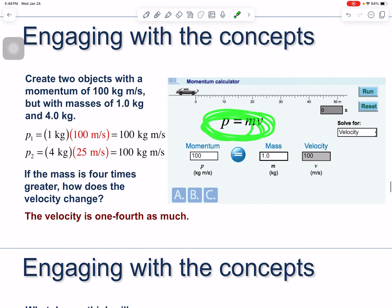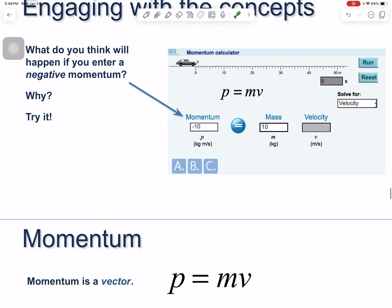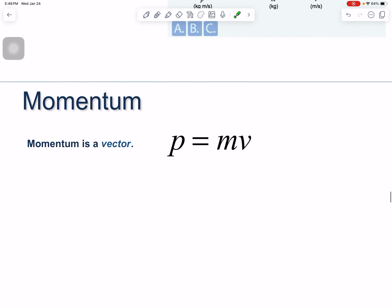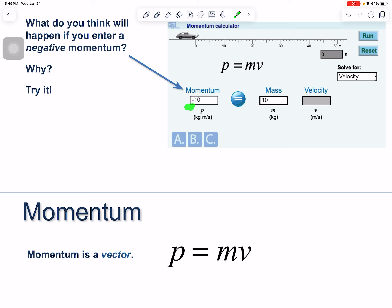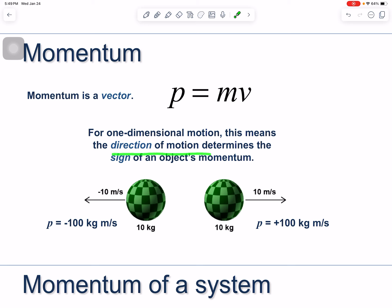What will happen if you enter a negative momentum into the simulator? The car goes the other way. Remember, momentum is a vector. The negative sign indicates direction — whether the car is going left or right. So the sign of momentum tells you which direction the object is moving. For one-dimensional motion, the direction is determined by the sign: negative typically means moving to the left, positive means moving to the right.